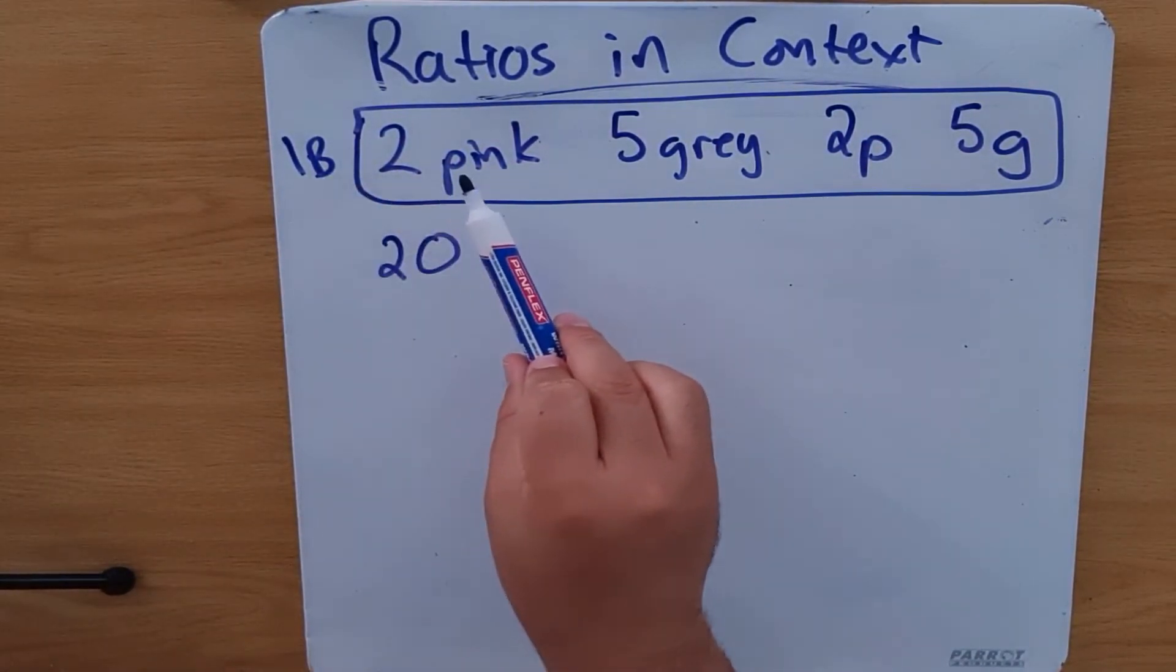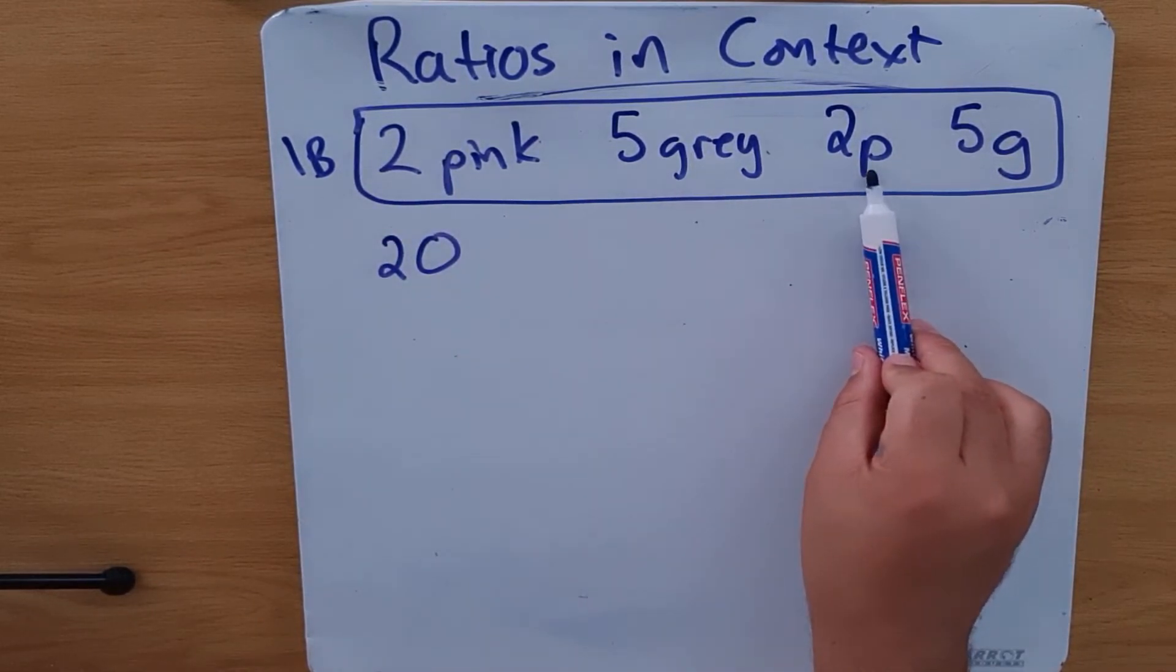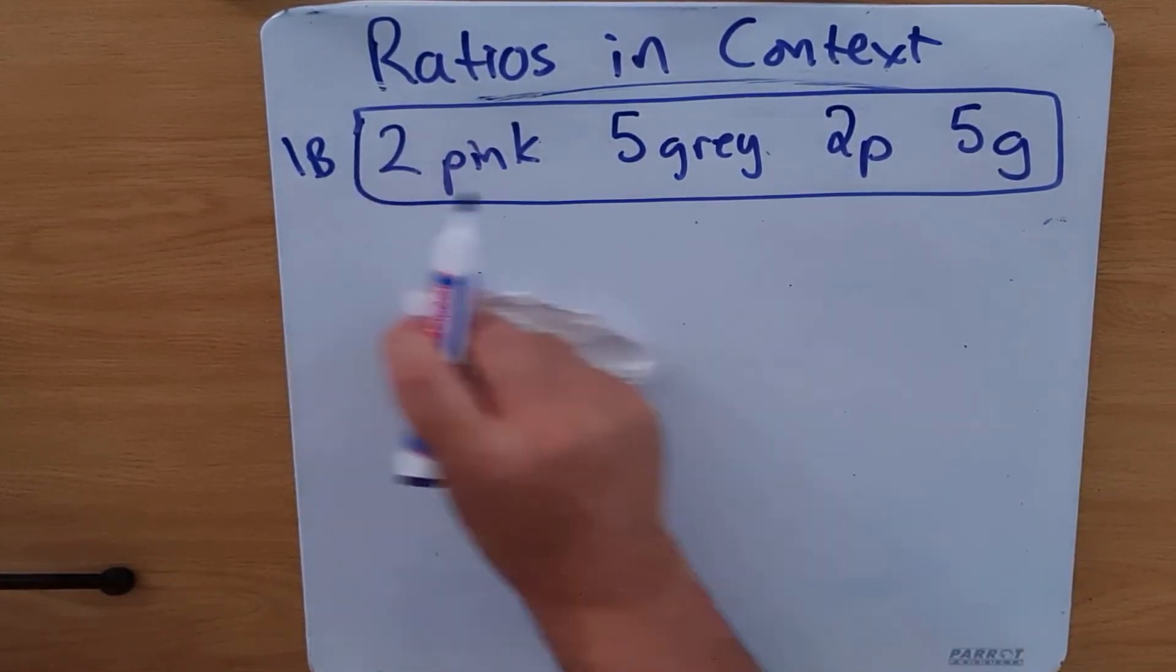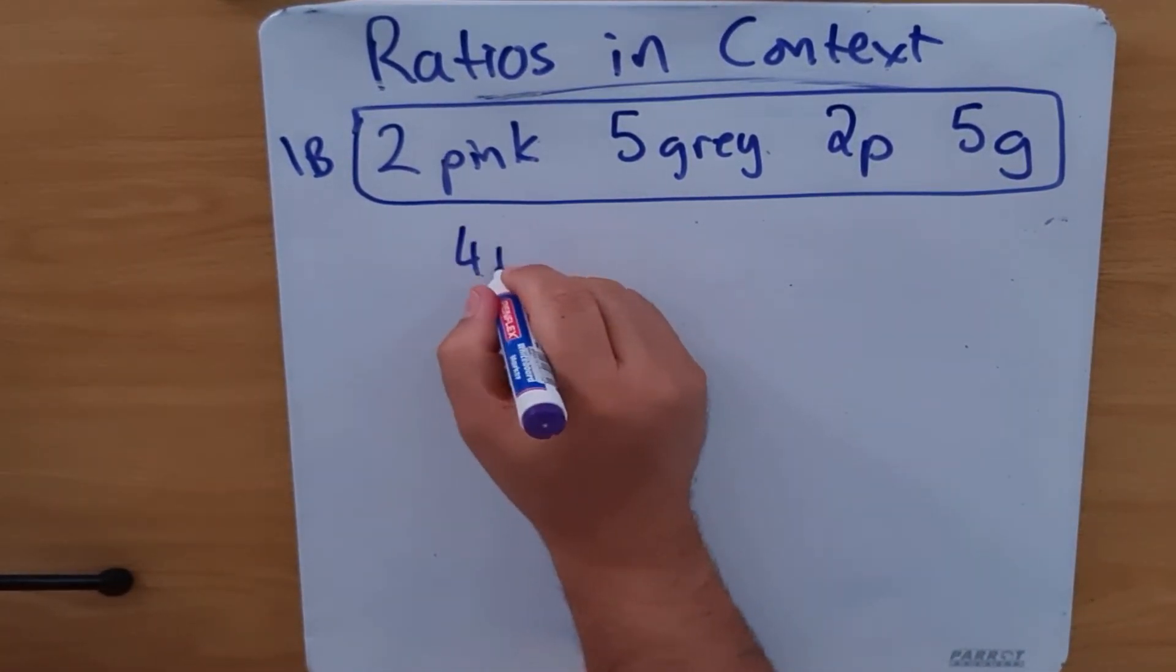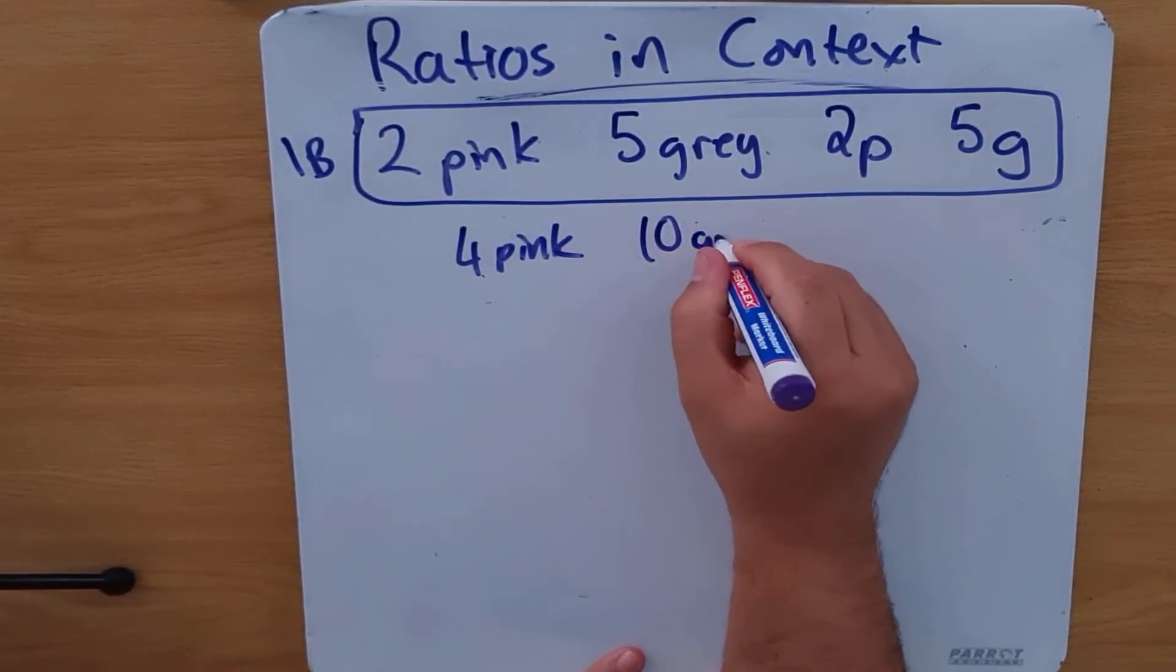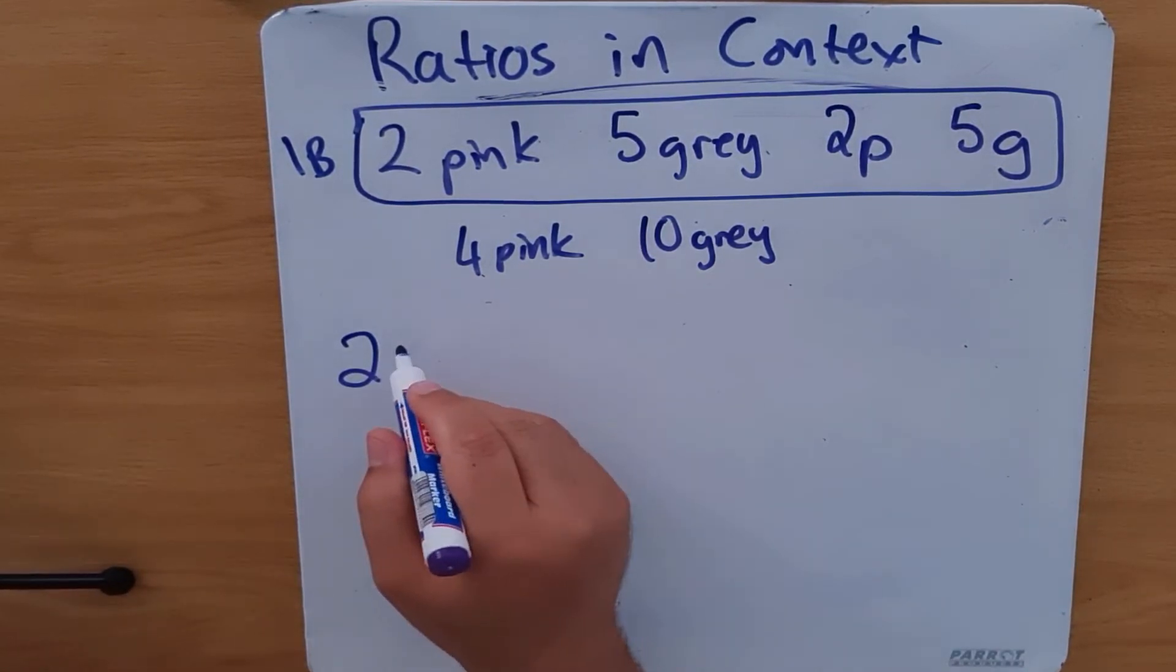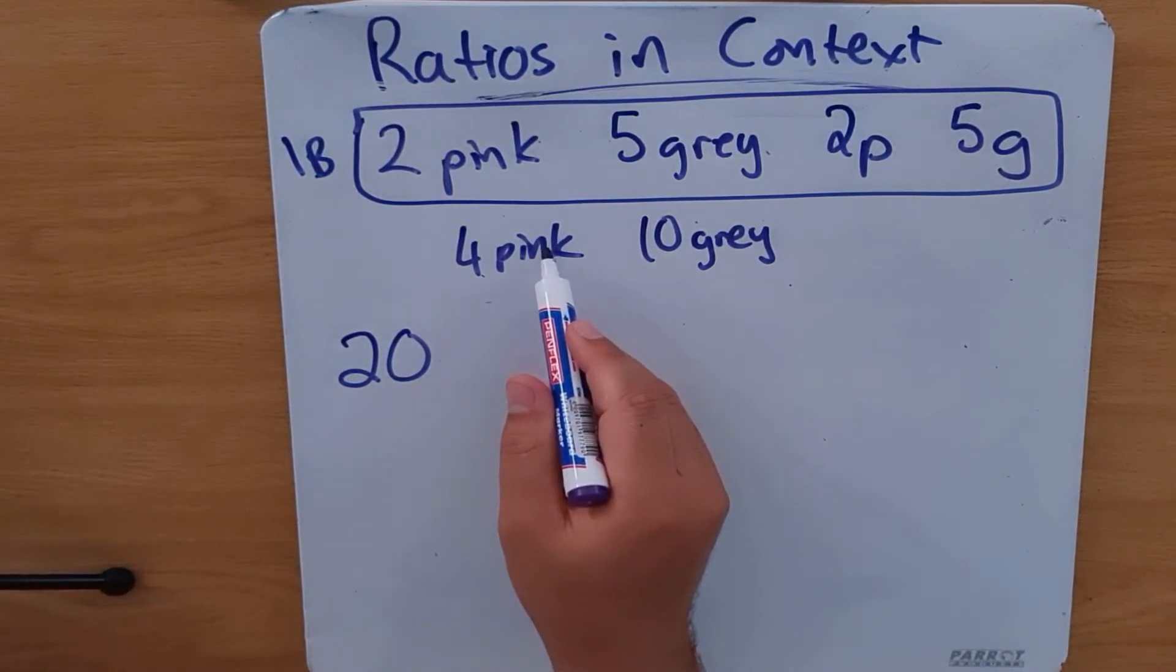One bracelet consists of two pink beads, five gray, two pink, five gray. So in total, to make one bracelet, she will need four pink beads and 10 gray beads. If she has 20 pink beads, we're going to divide the 20 by four.